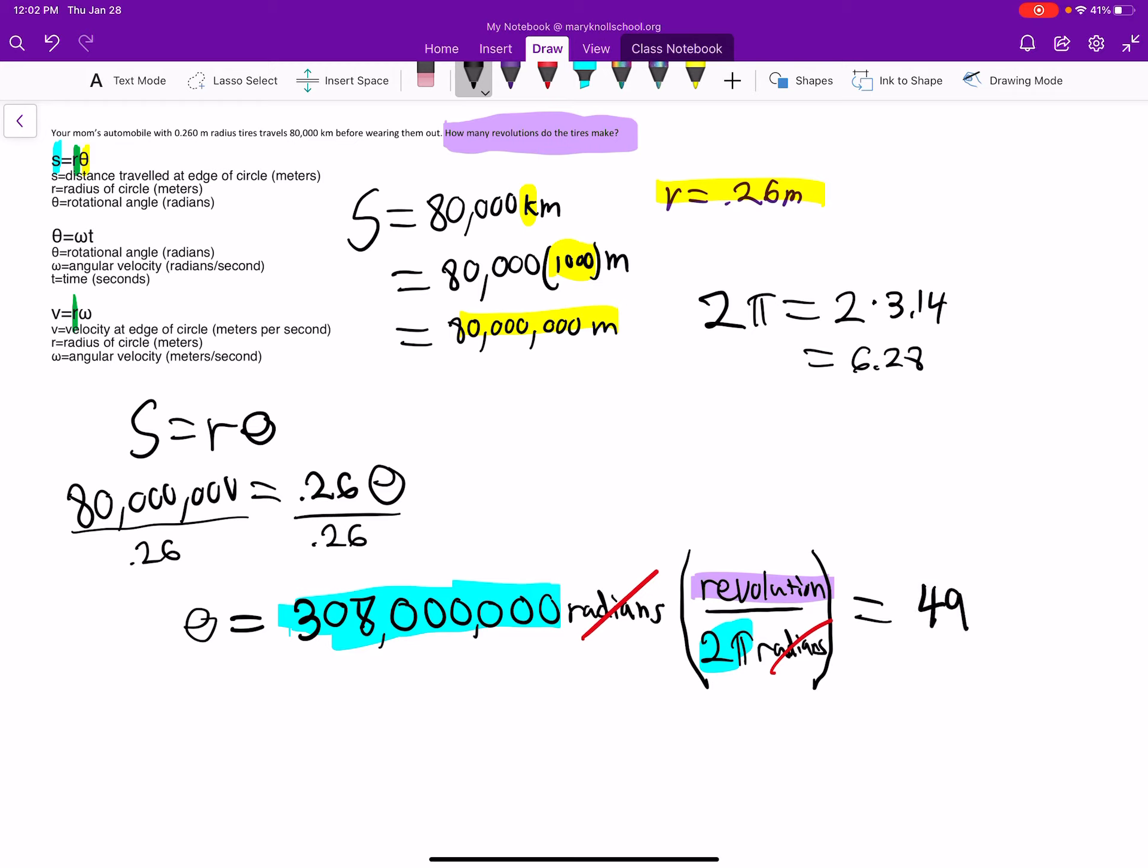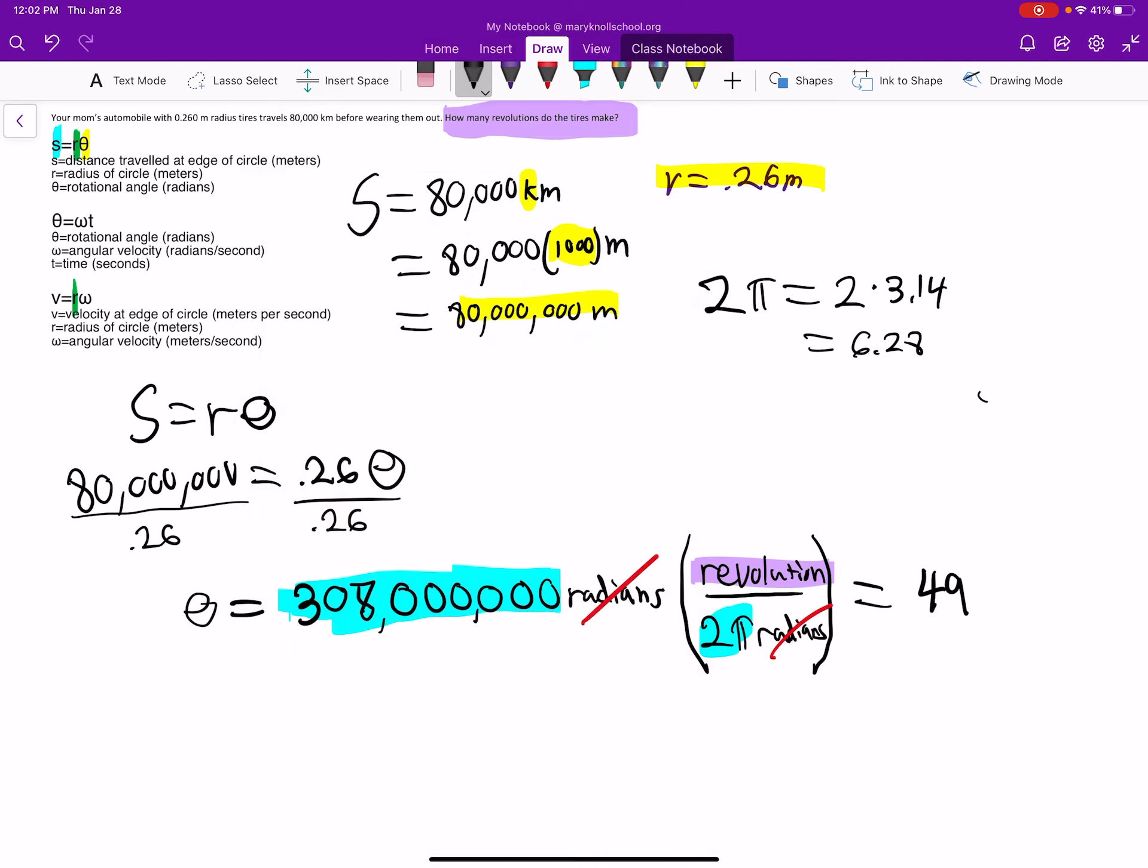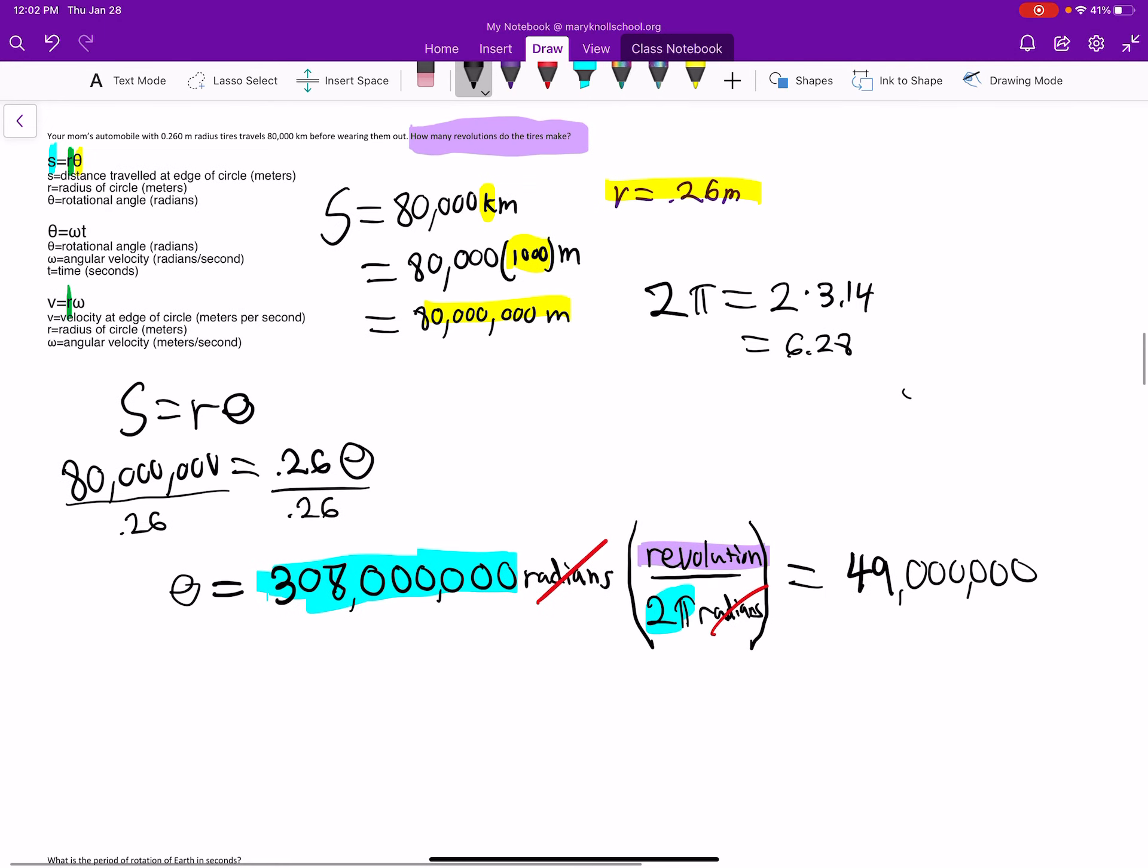I got a 49 and I'm going to count the zeros because, again, I just want three significant digits: one, two, three, four, five, six zeros. All right, so it looks like 49 million rotations, which is what we were trying to figure out.